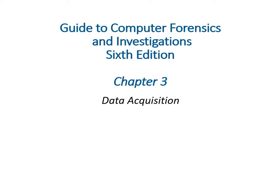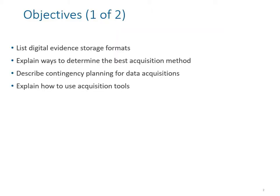The material we are going to cover today is data acquisition — how we can extract data in case you found evidence and a computer was infected or someone tried to penetrate the hard drive. The chapter objectives include listing digital evidence storage formats, explaining ways to determine the best acquisition method, and describing the contingency plan for data acquisition, including whether to maintain single or multiple copies.